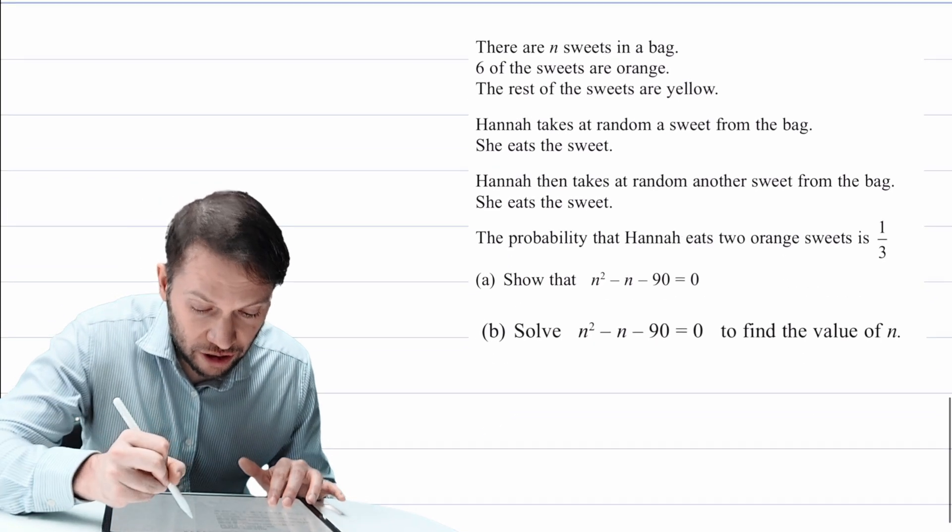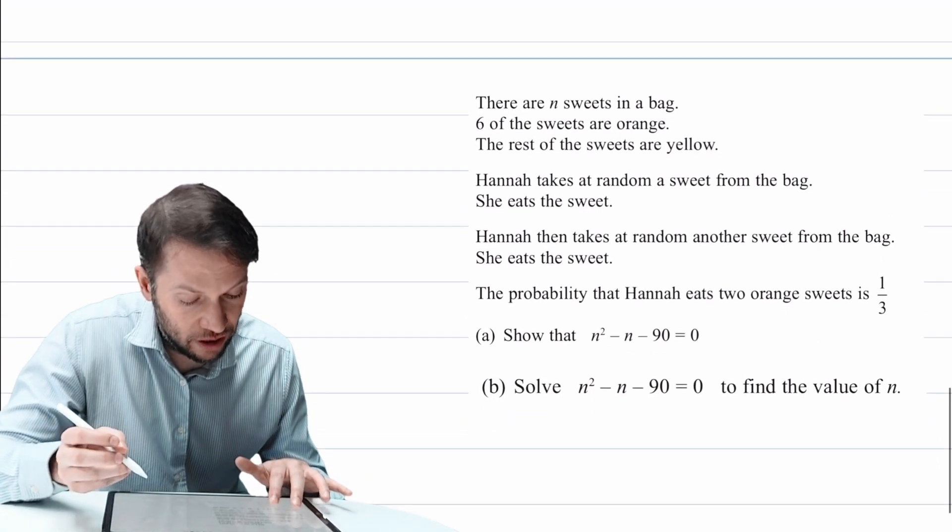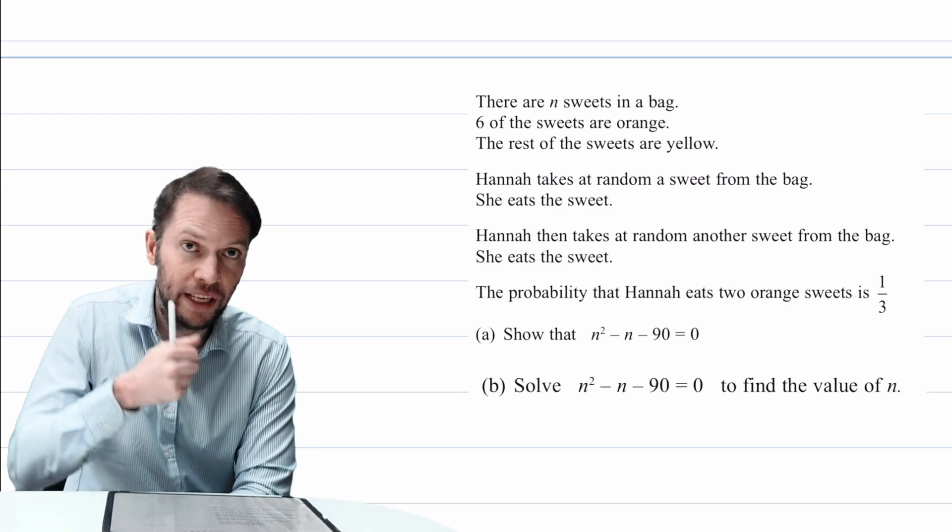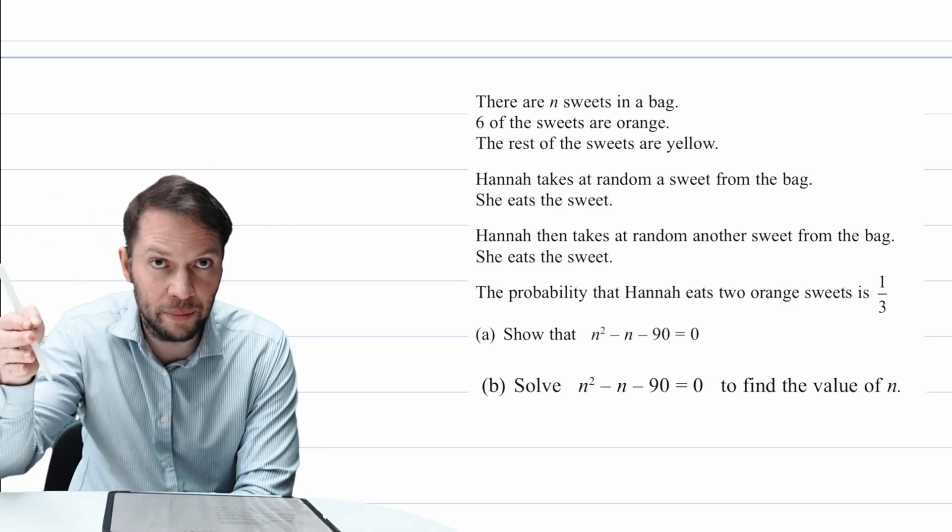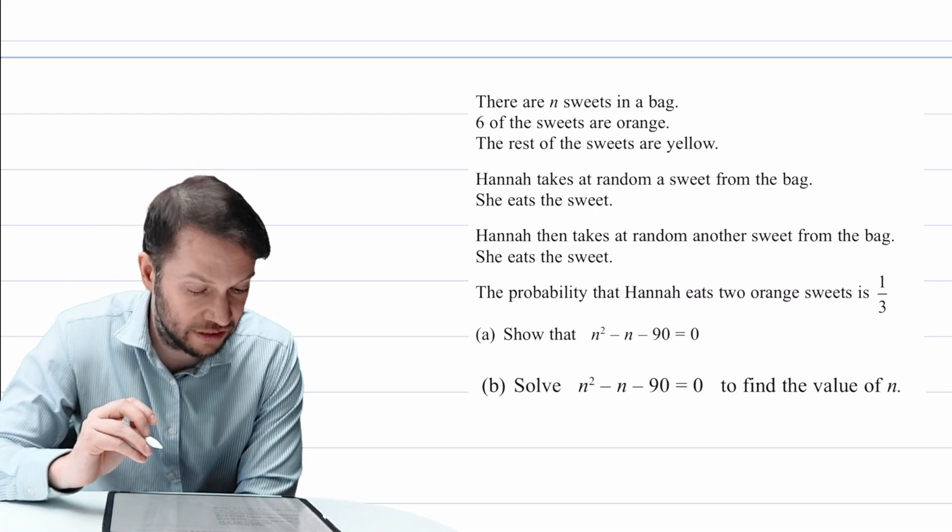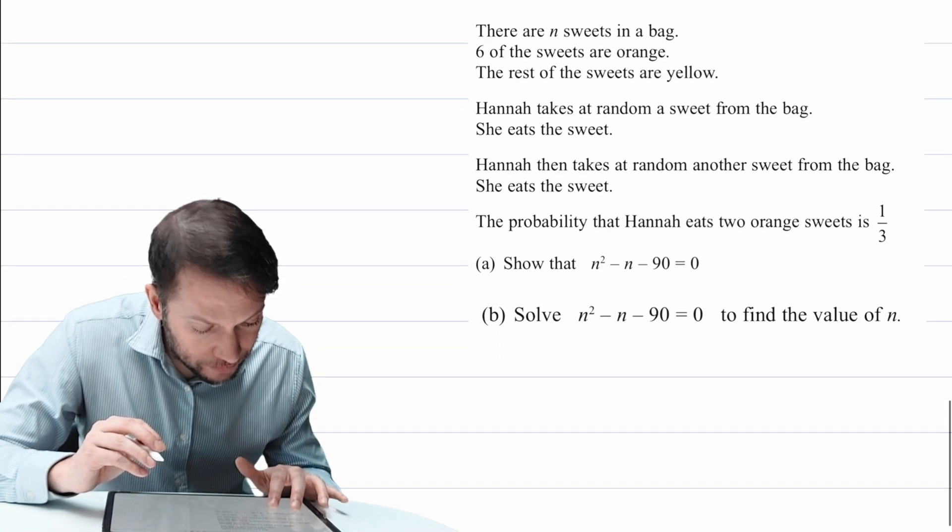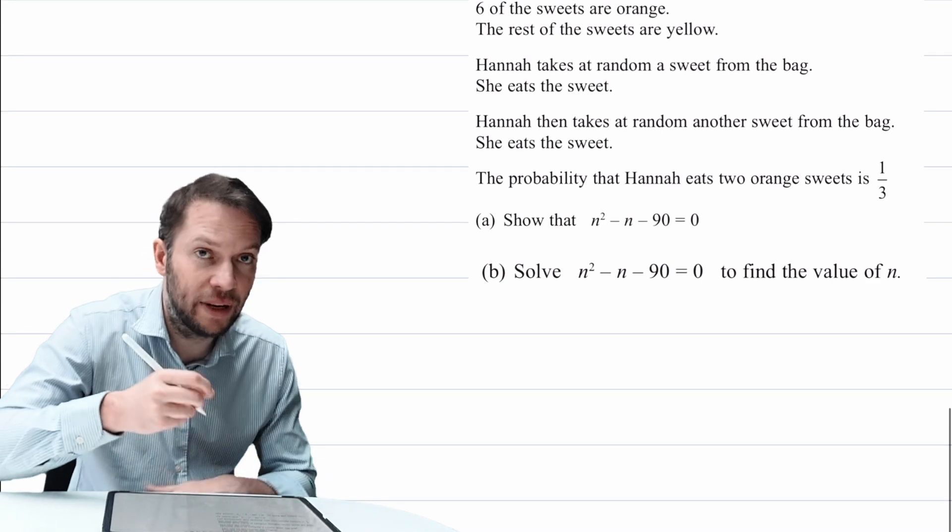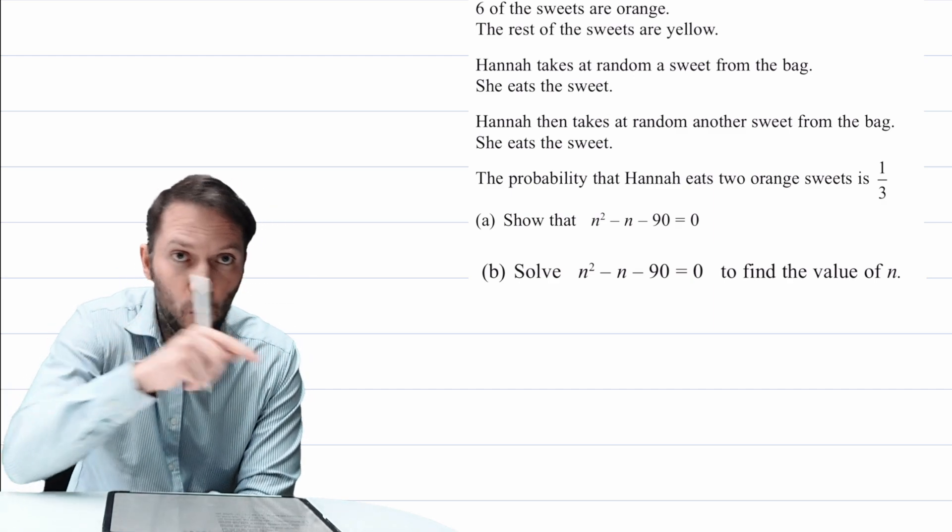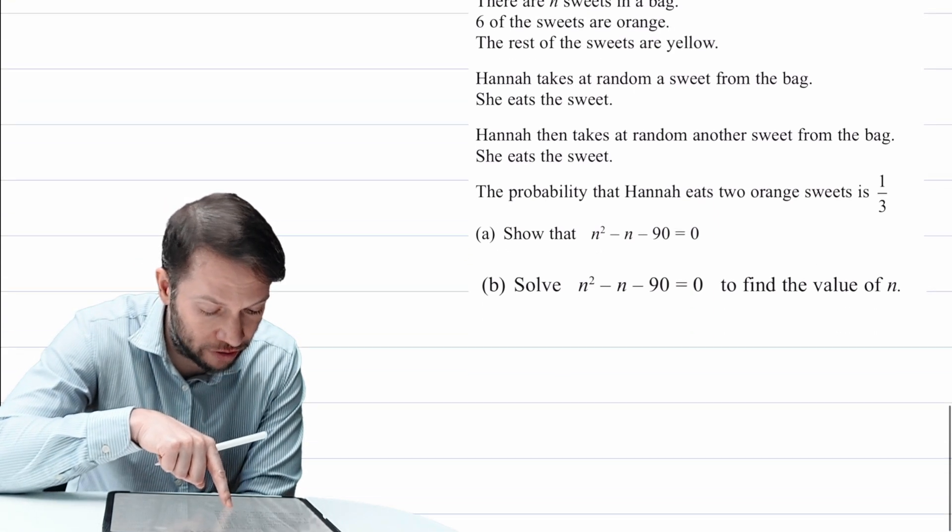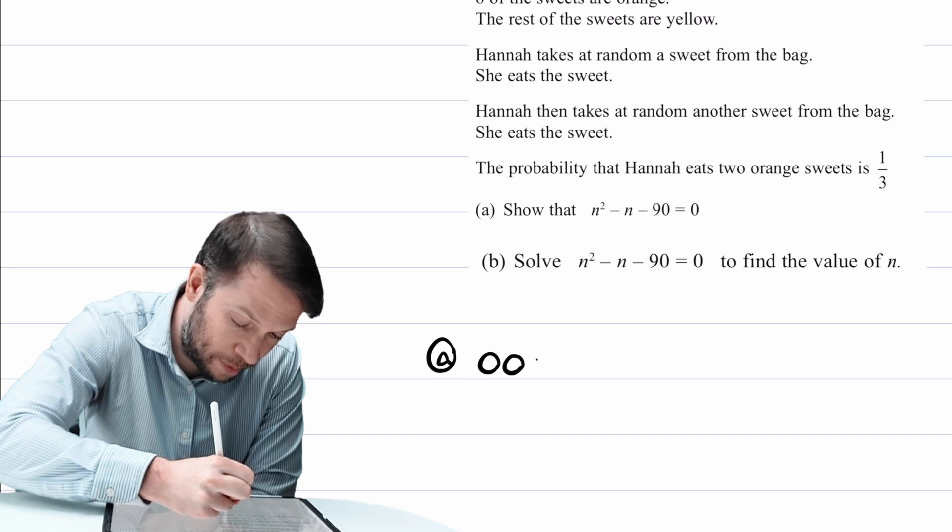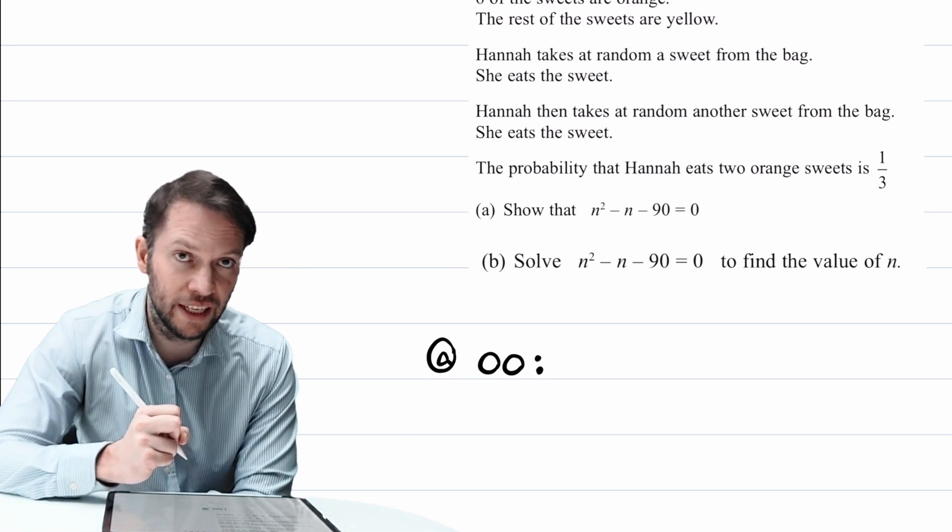Now, what we'd usually do is to find a probability like this of eating two orange sweets. It's a sequence of events. And basically to find the probability of a sequence of events, like one event happening and then another event happening, so eating the first sweet and then eating the second sweet, is to multiply those probabilities together. So, we're told it's the probability of eating two orange sweets. So what I typically do is I just write out what the sequence of events are. So we're eating two orange sweets. I'm going to say you're eating orange, then orange. I'm just going to use O for orange. I put a colon and then I write out what that probability is.